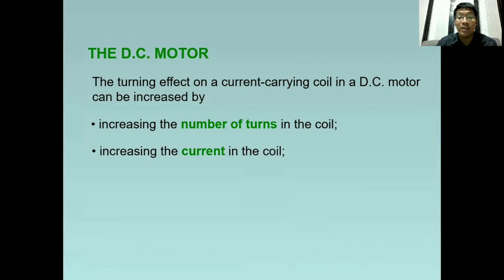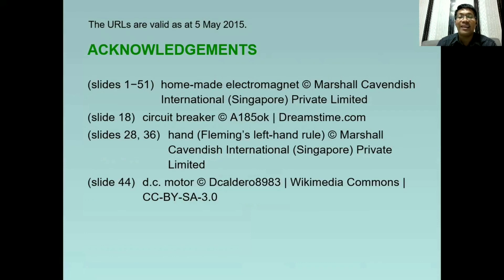Next, we can also increase the current in the coil. Also, we can use stronger magnets. And lastly, we can insert a soft iron core into the coil. At sa pamamagitan ng mga ito, mapapa-taas natin ang turning effect sa mga DC motors ng appliances natin at ng mga laroang battery operated.